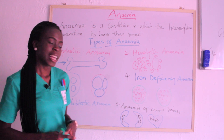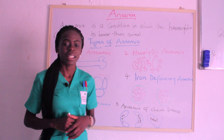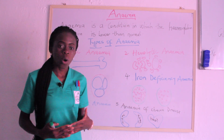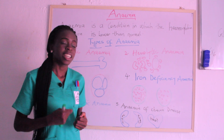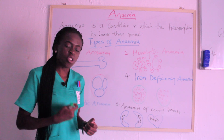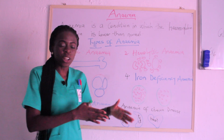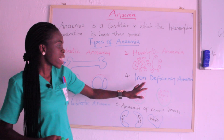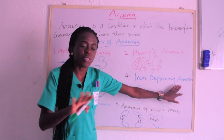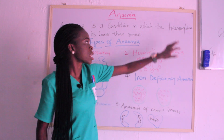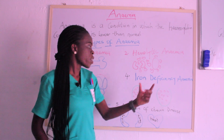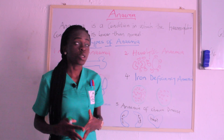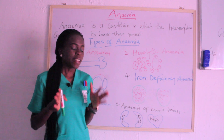The next one is iron deficiency anemia. As the name implies, iron deficiency anemia occurs as a result of deficiency in iron — there is not enough iron in the body, or there is iron in the body but the body is not absorbing it. Iron deficiency anemia means we do not have enough iron to produce hemoglobin. Whenever you hear iron, hem should come to your mind, because iron is very important in the production of heme.